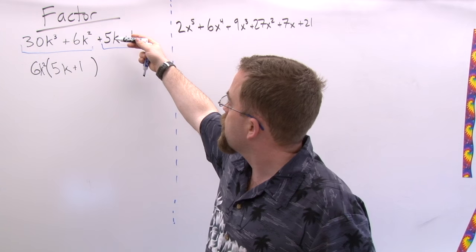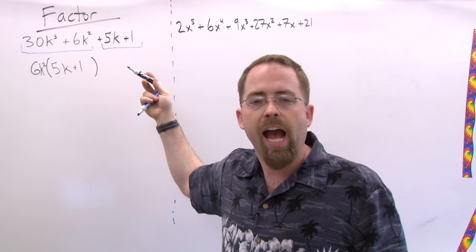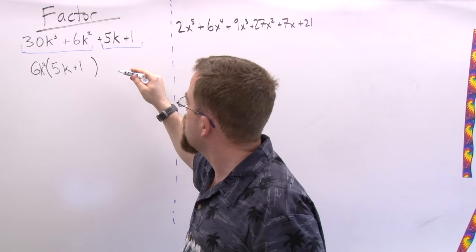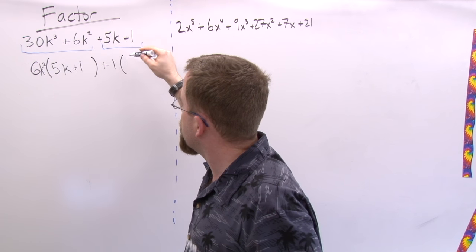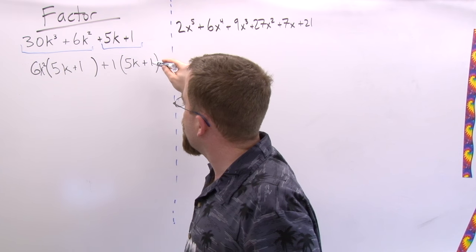So I'm going to call this taking out a one, and in which case I'm left with still 5K plus 1.